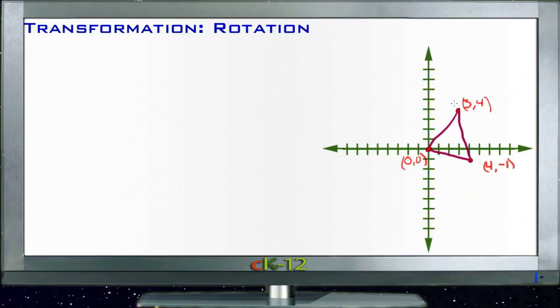This triangle starts off with three vertices: one at point (3,4), one at point (-4,-1), and one at point (0,0). If I take this triangle and I rotate it around the origin, right here. If I rotate this triangle around on the origin...